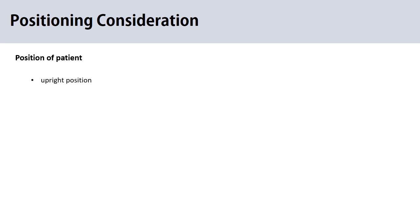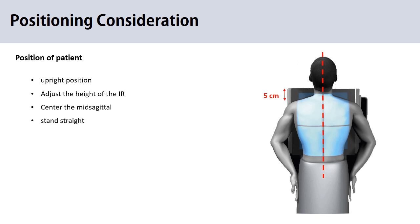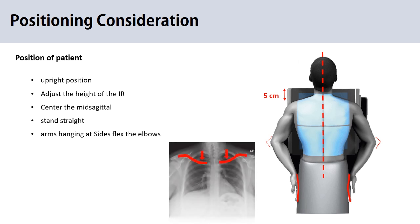Regarding patient position for chest PA, always try to examine the patient in the upright position — either standing or seated — so the diaphragm is at the lowest position and air and fluid levels are visible. Ask the patient to stand in front of the image receptor and adjust the IR just five centimeters above the relaxed shoulders. Check the mid-sagittal plane to the midline of the IR. Have the patient stand straight so the weight of the body is equally distributed on both feet, then ask the patient to flex the elbows and rest the back of the hands on the hips.